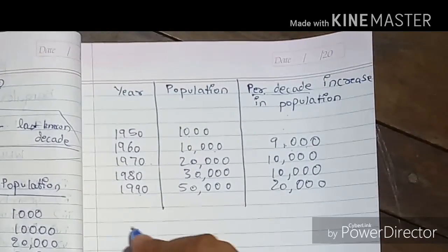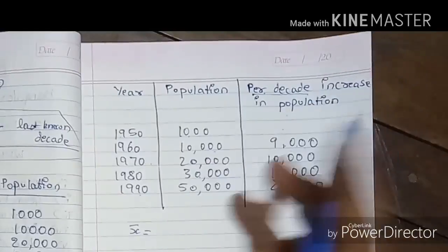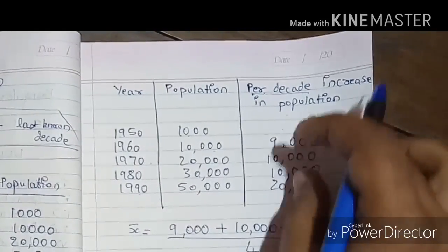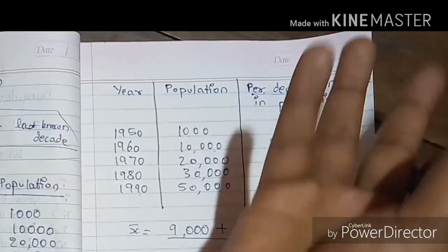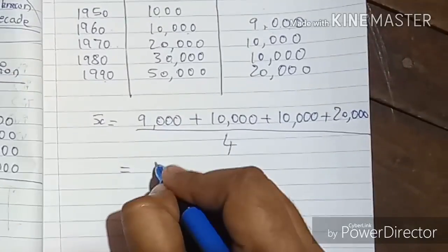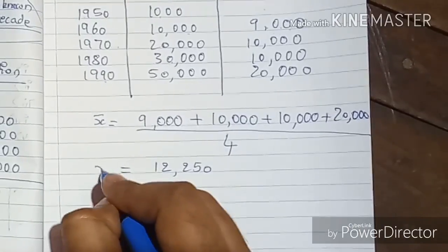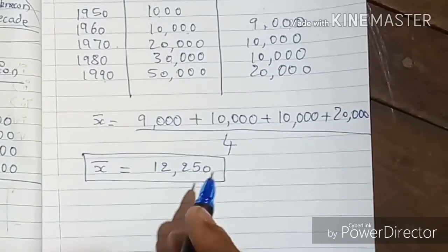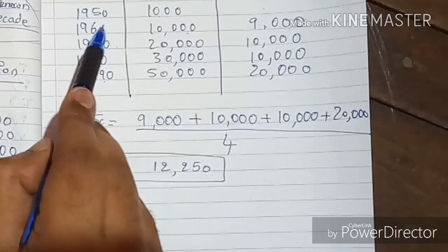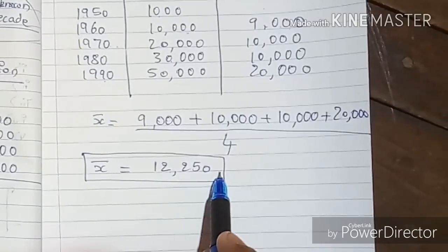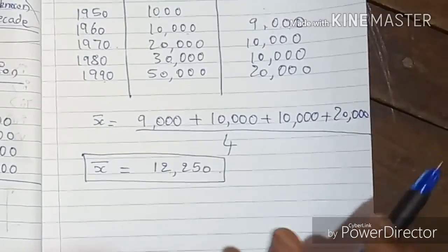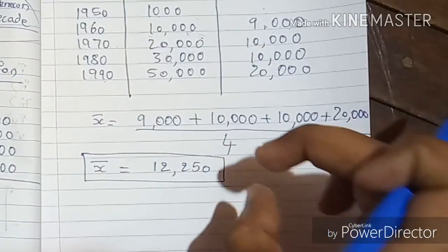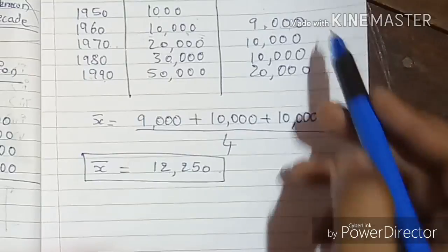To find X̄, add up all the per-decade increases and divide by the number of values. There are four values: 9,000 + 10,000 + 10,000 + 20,000. We are taking the average increase in population. X̄ = 12,250. This means on average, for every one decade, 12,250 people were added to the city.